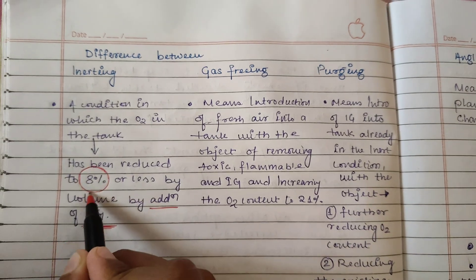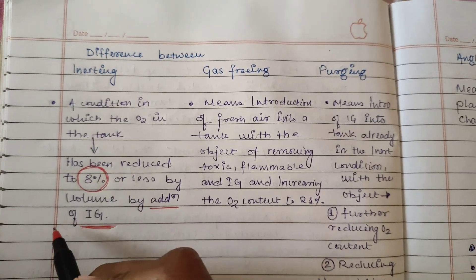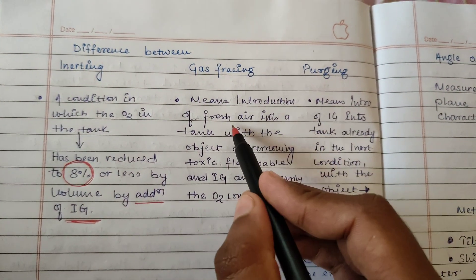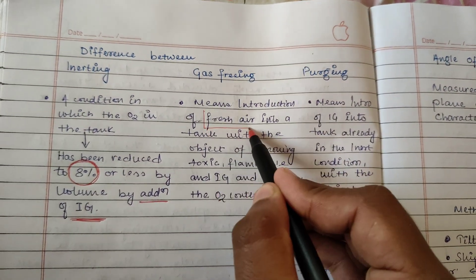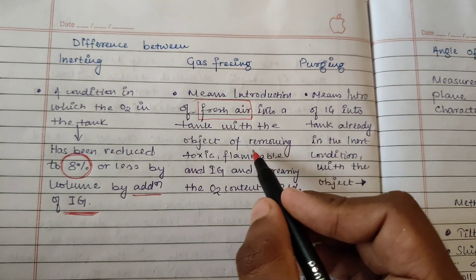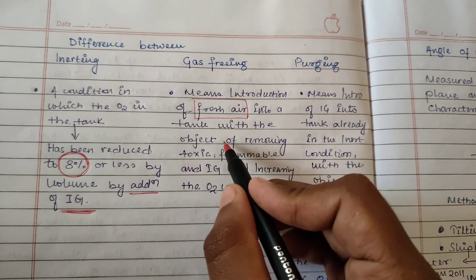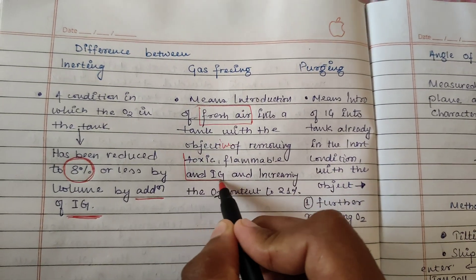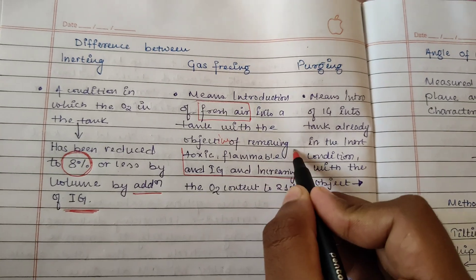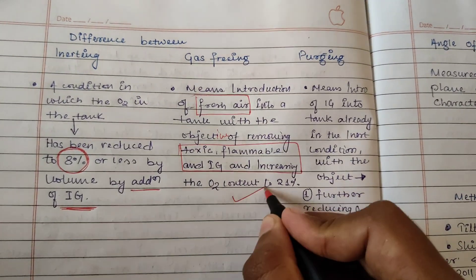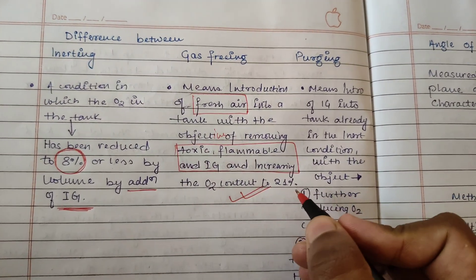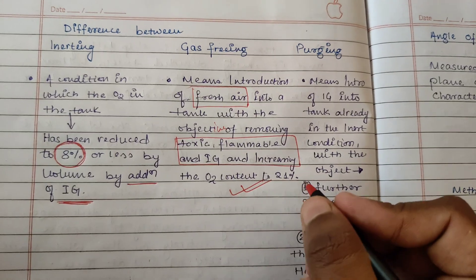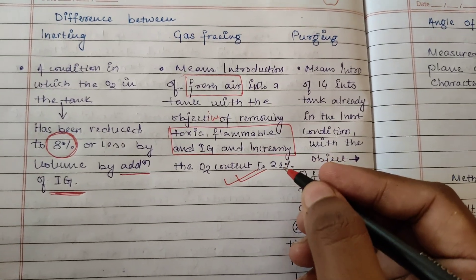So the main purpose of inerting is to reduce the oxygen content. Gas freeing means the introduction of fresh air into the tank with the objective of removing toxic, flammable, and inert gases and increasing the oxygen content to 21%.